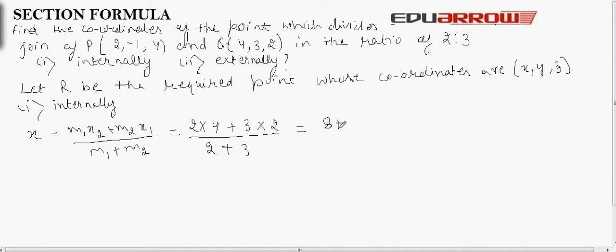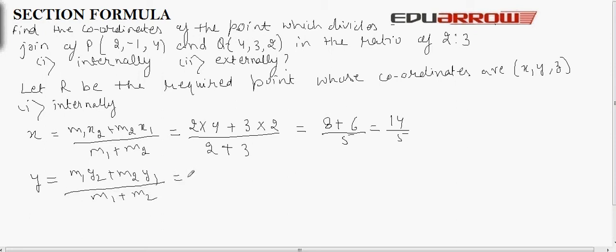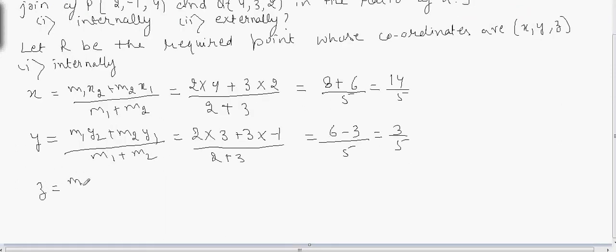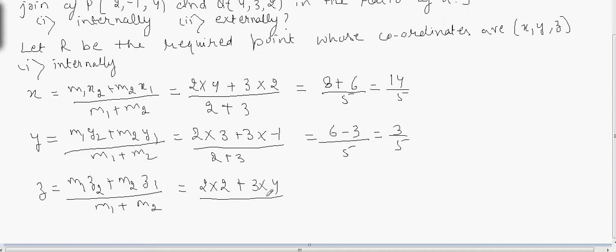4 times 2 is 8, 3 times 2 is 6, divided by 5, which equals 14 by 5. The coordinate of y will be (M1 times y2 plus M2 times y1) divided by (M1 plus M2), where M1 is 2, y2 is 3, M2 is 3, y1 is -1, divided by (2 plus 3), which equals (6 minus 3) divided by 5, equal to 3 by 5. And z equals (M1 times z2 plus M2 times z1) divided by (M1 plus M2), which equals (2 times 2 plus 3 times 4) divided by (2 plus 3).